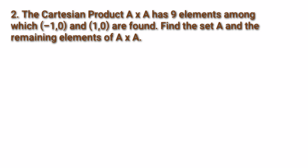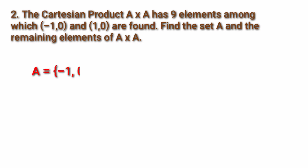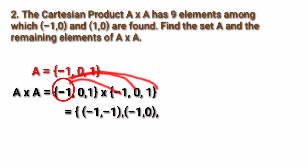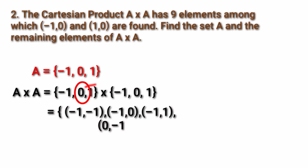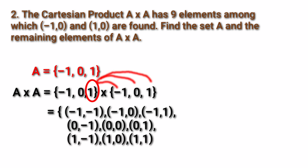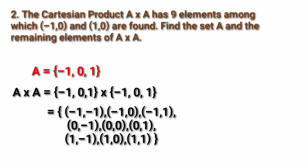Given elements (-1, 0) and (1, 0), we determine A = {-1, 0, 1}. Therefore A × A consists of all ordered pairs: (-1,-1), (-1,0), (-1,1), (0,-1), (0,0), (0,1), (1,-1), (1,0), (1,1).